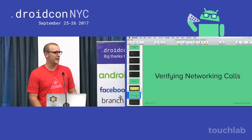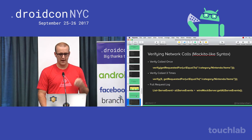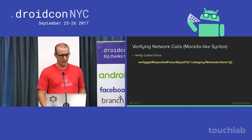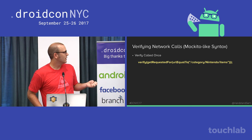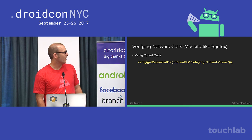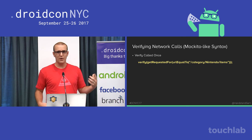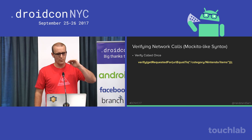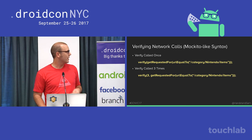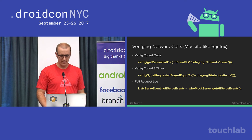Similar to Mockito for JVM testing, you can verify that a call was made. With WireMock you can say: verify that a GET request was called to '/category/Nintendo/items.' This will make sure exactly one API call was made to that endpoint. WireMock has a list of all calls made through it and can validate them. You can also verify it was called three times, or get the entire list of all events that WireMock served for other custom validations.